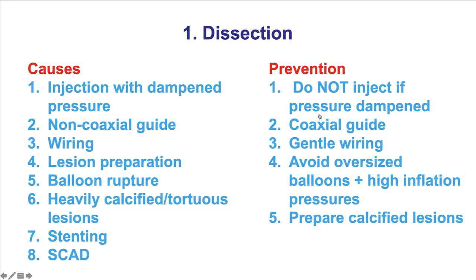What causes dissection? Contrast injection when there is dampened pressure is one of the main causes, and that is why it is important to always look at the pressure before as well as after injecting contrast. Non-coaxial guide position, wiring through a very tight or ulcerated lesion, and lesion preparation with balloons or atherectomy can all lead to dissection. Sometimes balloon rupture can cause it, and this is more likely if lesions are heavily calcified or tortuous.